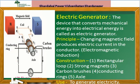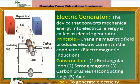आता पुढे काय होते ते बघा. याचे जे एक half circle पूर्ण होते. If instead of one loop coil, a coil consisting of several turns is used, the current of several times magnitude flows. म्हणजे एका coil ऐवजी जर अनेक coils एकत्र केल्या, तर जो induced current आहे, तो त्याच्या पटीमध्ये वाढणार.